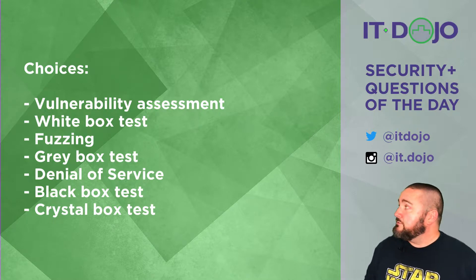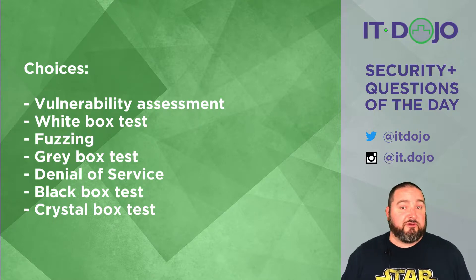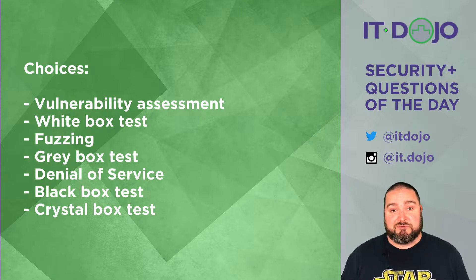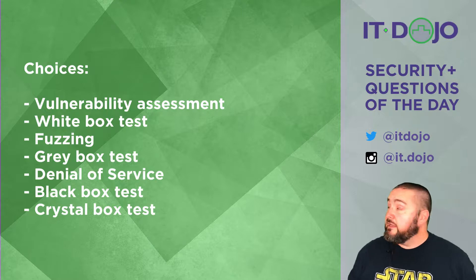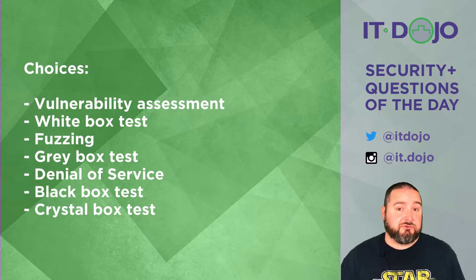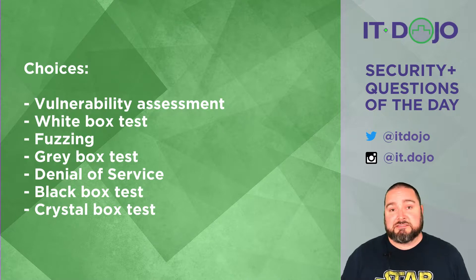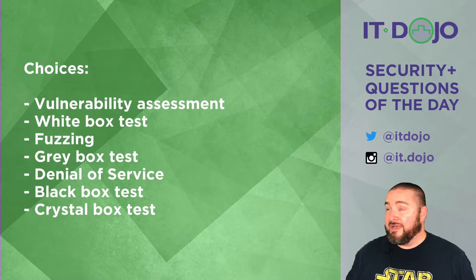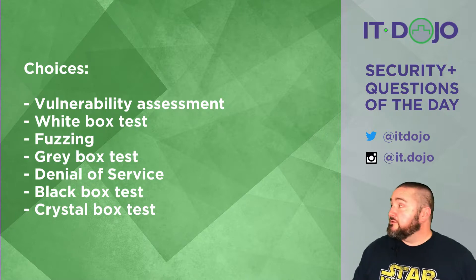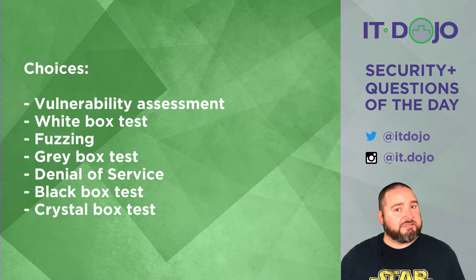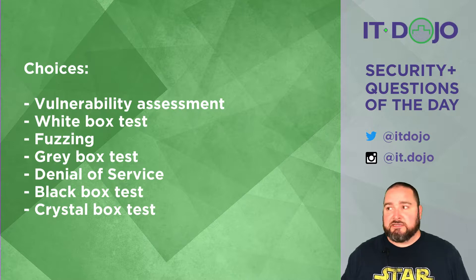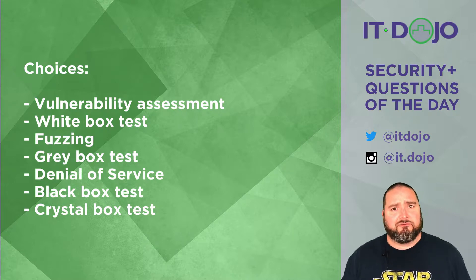The next two choices are also not correct. You are not fuzzing — fuzzing may be something that you do as part of your penetration test, but fuzzing is not specifically the type of test that you are doing. The next option, which is not correct, is gray box testing. Gray box testing is a mixture between black box and white box testing — it sort of sits right in between, and you are not doing that here either. Next choice on the list is a denial of service — that's not a test, it's an attack.